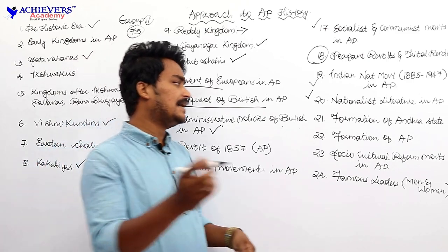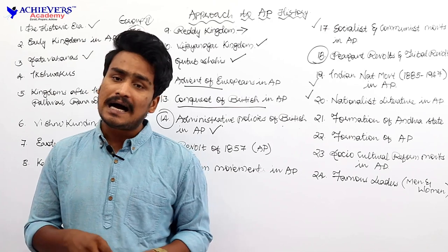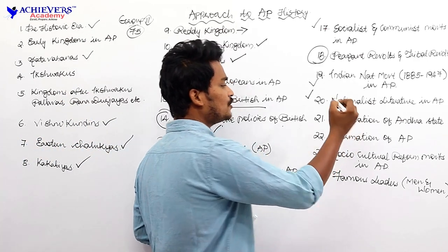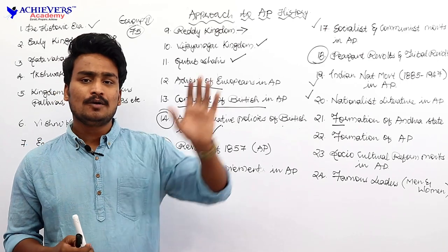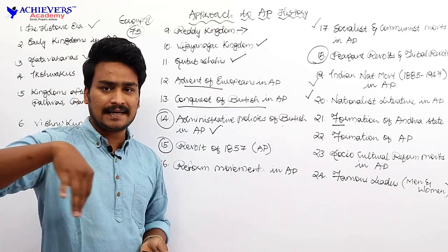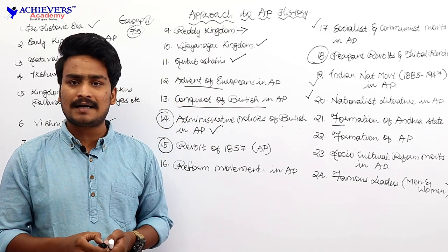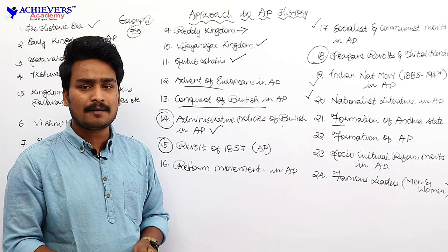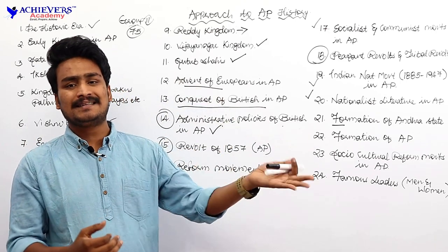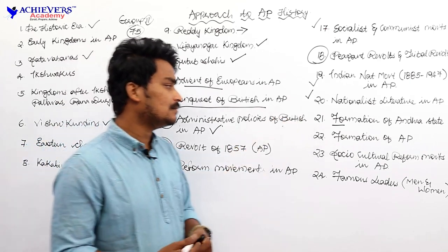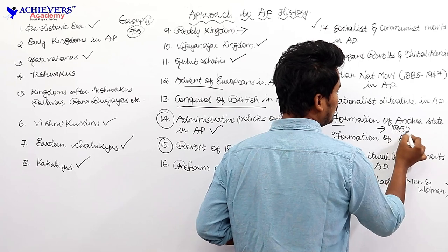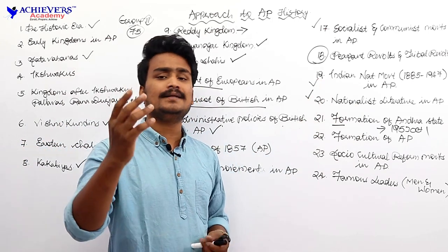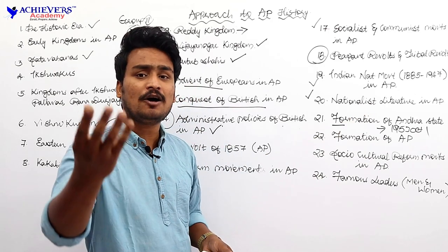After the attainment of independence, the important issue with respect to Andhra Pradesh history is the formation of Andhra state. Andhra state was a part of Madras. We already know the history of Potti Sriramulu — his struggle led to the formation of Andhra state on October 1st, 1953, with Kurnool as its capital. We shall discuss who are the important leaders in the formation of Andhra and the history of Potti Sriramulu.